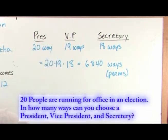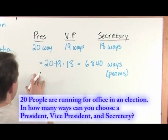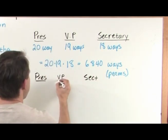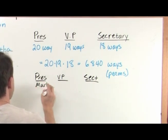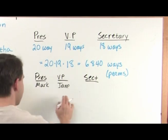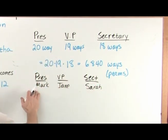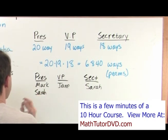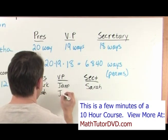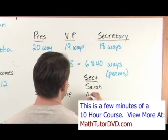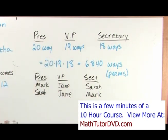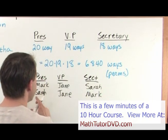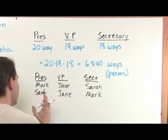Now I want to prove to you that the order did matter. If someone picked Mark for president, Jane for vice president, and Sarah for secretary — that is one permutation. But if someone else picked Sarah for president, Jane for vice president again, and Mark for secretary — they're the same people involved, but these are different permutations because the order is different.